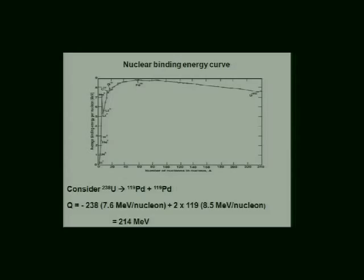So every single time I can separate U-238 into two palladium-119s, I generate 214 MeV of energy. That's a lot of energy for a nuclear reaction. It doesn't mean it's easy to do, but in principle, if I can make that split, I get a lot of energy out.